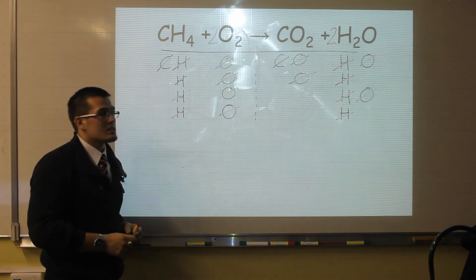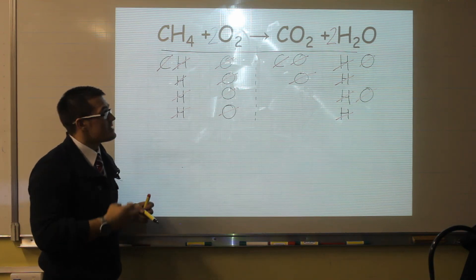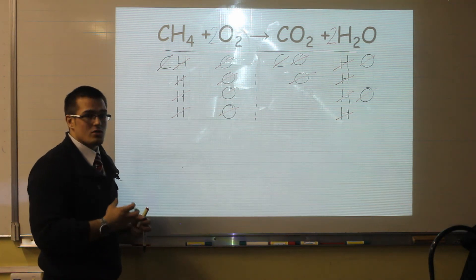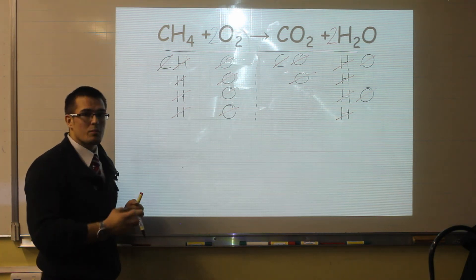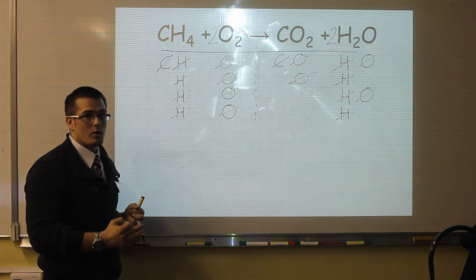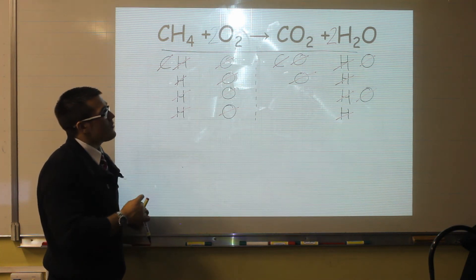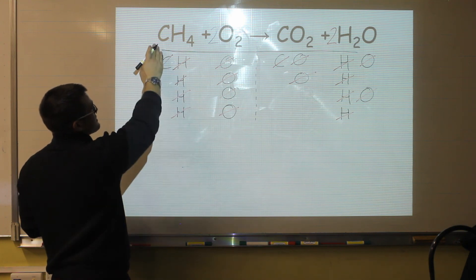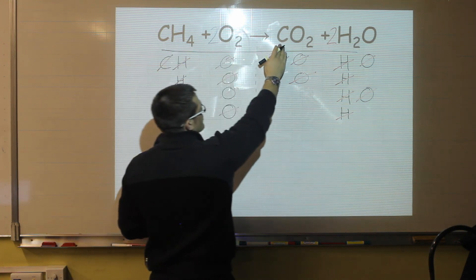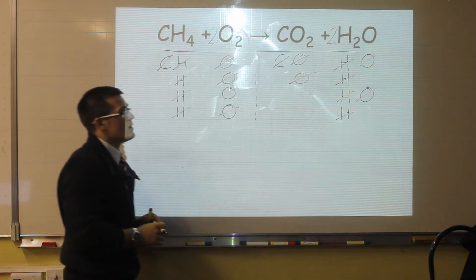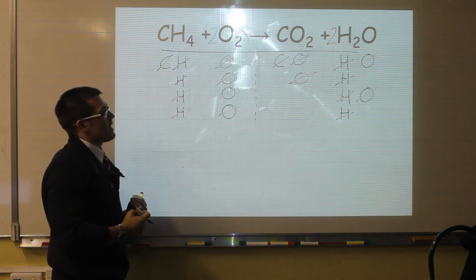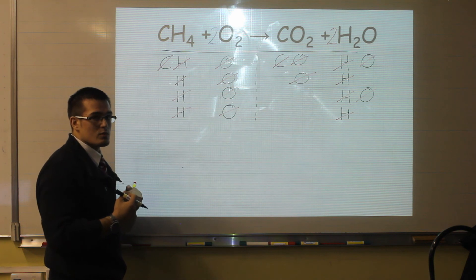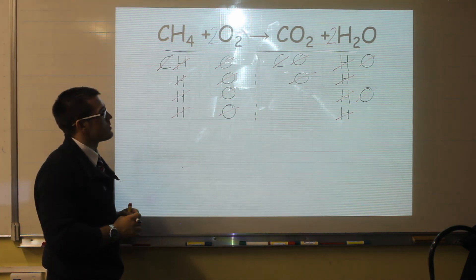Balancing equations can at first seem difficult. Take your time, learn the rules, and break it down. The answer is not always going to be obvious — sometimes you'll need to play around with the numbers and just keep going until it fits. If you end up with numbers that are really big, for example if this was 2, 4, 2, and 4, you would just divide it down so that you have the lowest common multiple. So you want it in the smallest numbers possible.